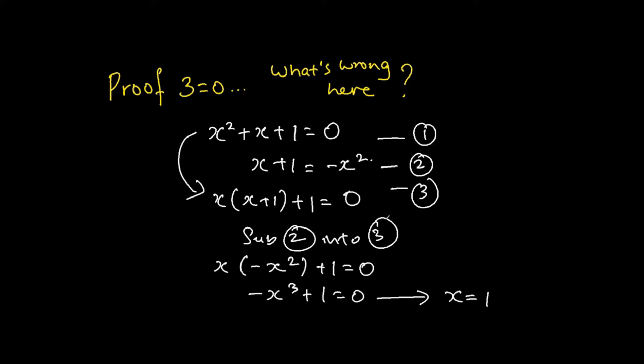But if you were to take this, x is equal to 1 and sub it into the first solution, you will realize that 1 plus 1 plus 1 is equal to 0. So what is the problem down here?